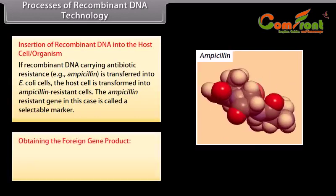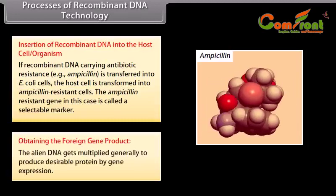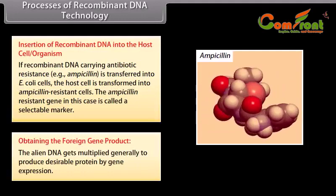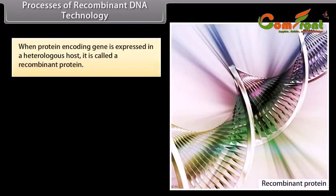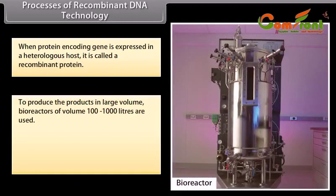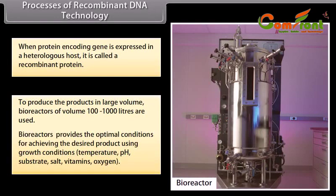Obtaining the foreign gene product. The alien DNA gets multiplied and generally produces a desirable protein through gene expression. When a protein-encoding gene is expressed in the heterologous host, it is called a recombinant protein. To produce products in large volume, bioreactors of volume 100 to 1000 liters are used. Bioreactors provide optimal conditions for the desired product using growth conditions such as temperature, pH, substrate, salt, vitamins, and oxygen.